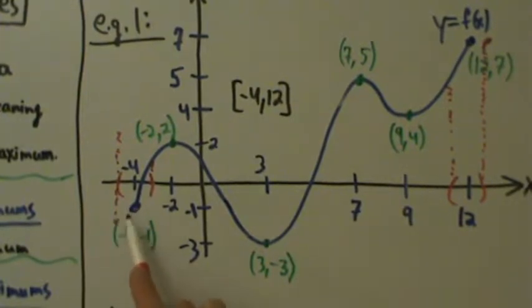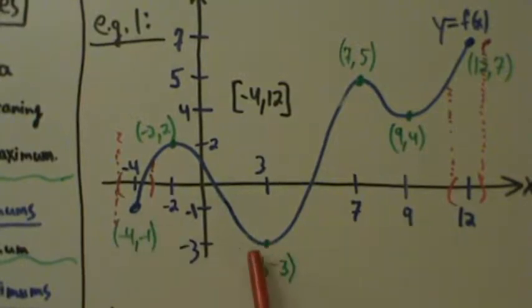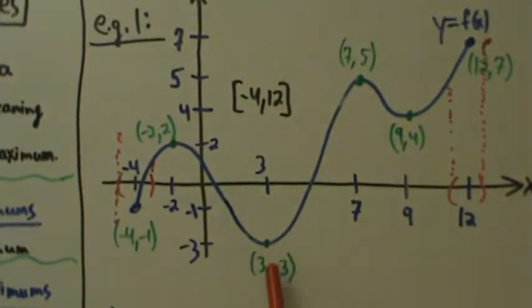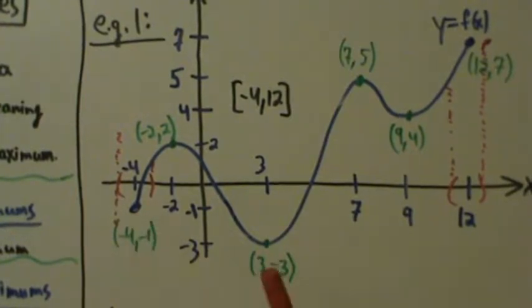So this left endpoint can't be a local min, and it's also not a global min, because there's a smaller y-value elsewhere on the function. Basically, that just means this point is nothing — it's not a max or a min, local or global, in any case.